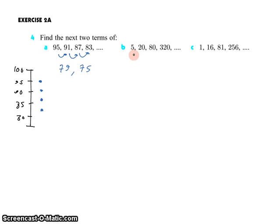But 5 times 4 is 20. And 20 times 4 is 80. So I wonder if 80 times 4 is 320. Well, 4 times 0 is 0, and 4 times 8 is 32. So yeah, 320.